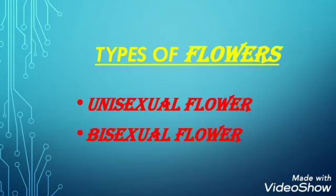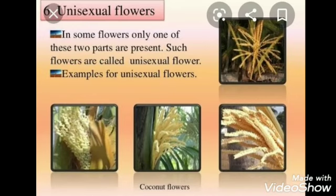Types of flowers: unisexual and bisexual. Unisexual and bisexual flowers are two types of flowers found in plants. Some flowers are unisexual — it means they have flowers with either stamen or pistil, that is, they have any one of the reproductive parts. Examples of plants with unisexual flowers are tapioca, cucumber, etc.